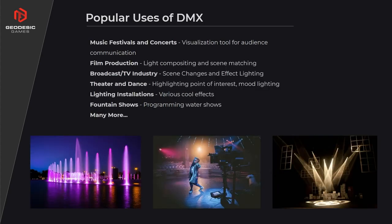Let's think about what sort of uses there are in current industries. One of the most popular is in the music industry — music festivals, concerts, and shows — where DMX is used to control lighting and lasers as a visualization tool for audience communication. Within the film production industry, it's used for light compositing and scene matching so you can make the actor seem more like they're actually in the scene. In broadcast and TV, it's used similarly for lighting up the area. We also have theater and dance, lighting installations, and fountain shows — for example in Las Vegas — which are all programmed via DMX.